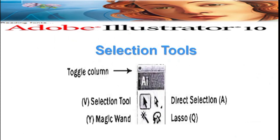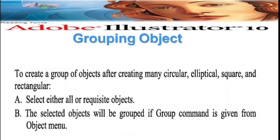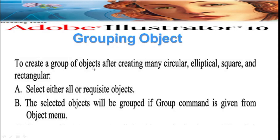The four tools are called the selection tools: the selection tool, direct selection tool, magic wand, and lasso. These four tools contain the selection tool. Grouping objects: to create a group of objects, after creating many circular, elliptical, square, and rectangular objects, select all or the required objects.